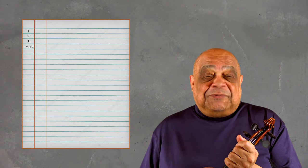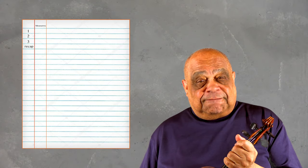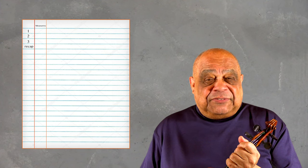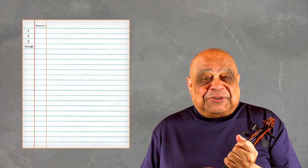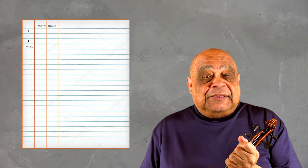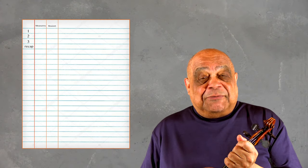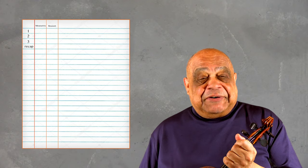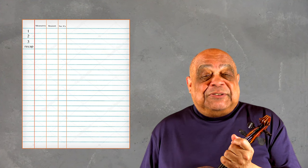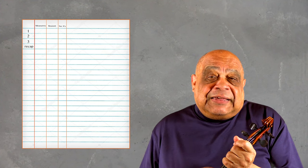Here, I put the specific measures from the passage that I was to work on. The third column, titled Reason, was where I explained why I was working on this specific area of the passage. The fourth column was where I marked the number of times I was to do the area that I designated.